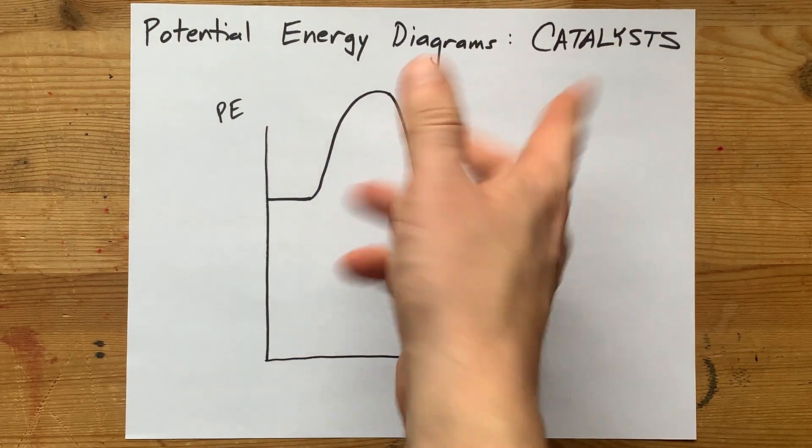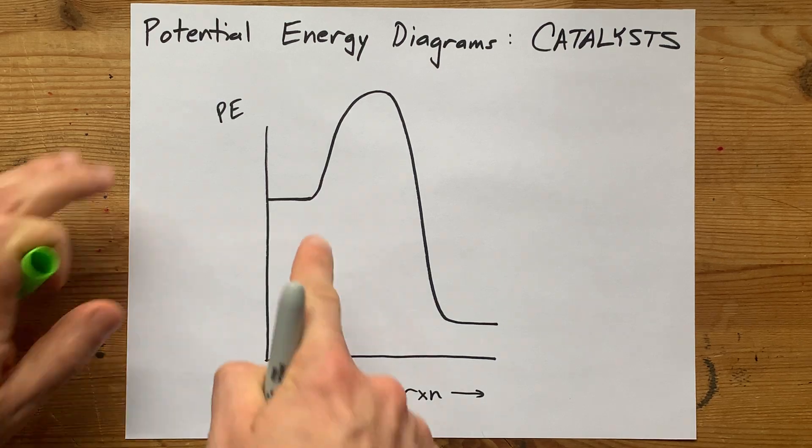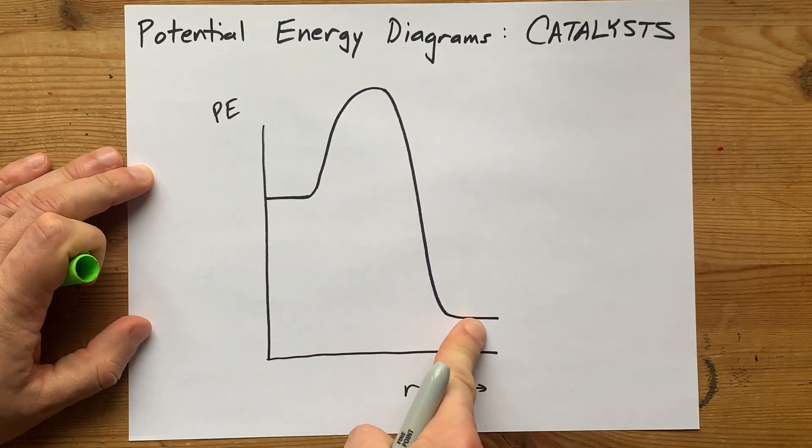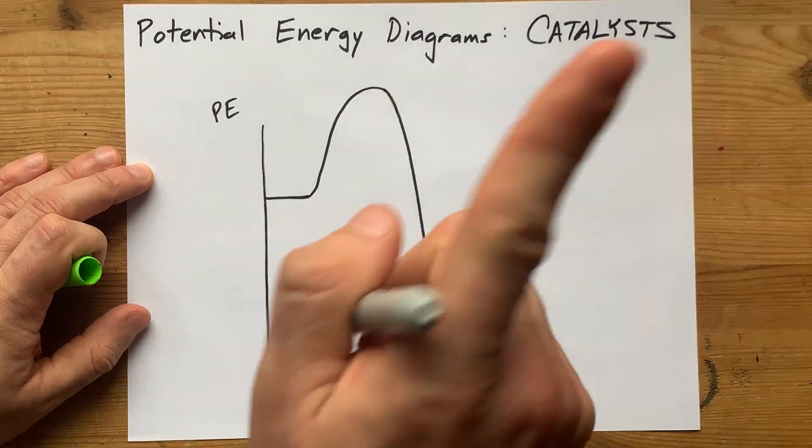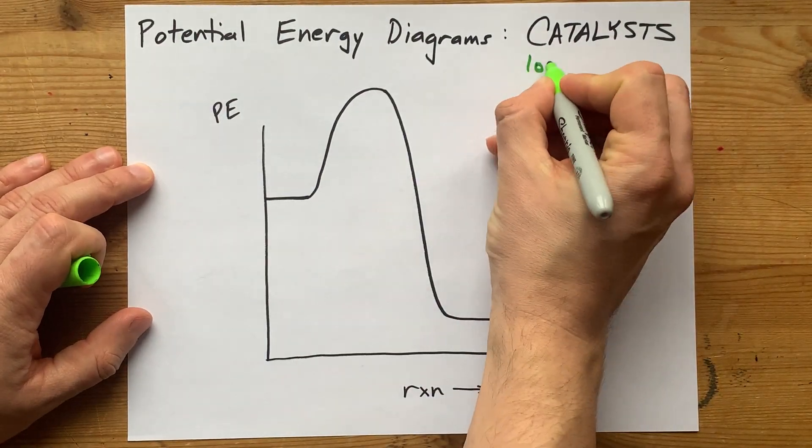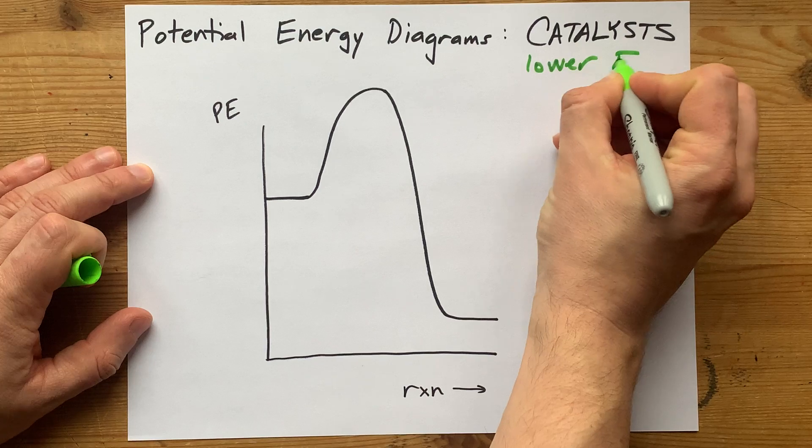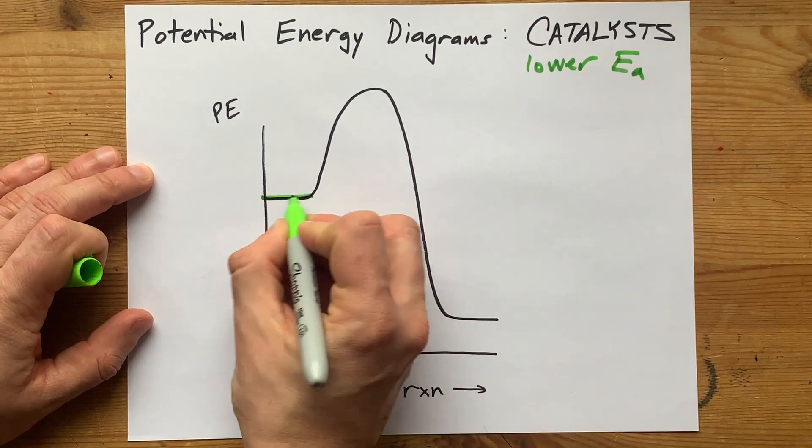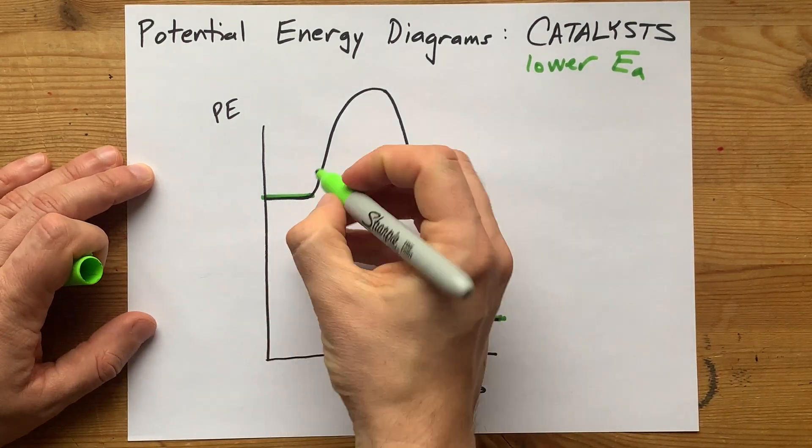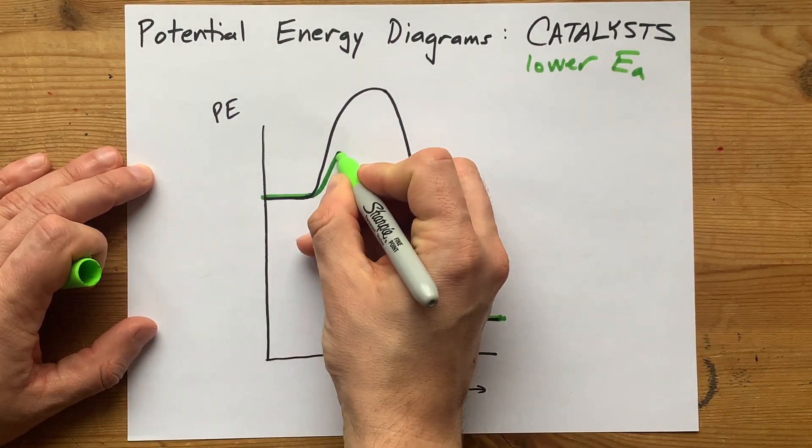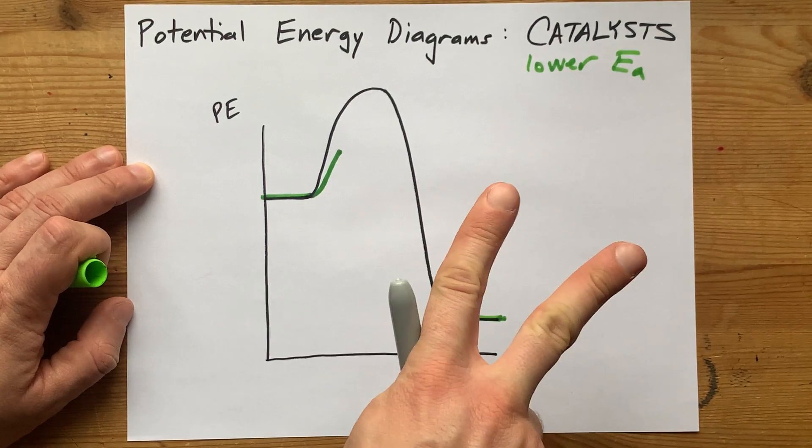A catalyst, by definition, will have the same reactants and products, but it will change the mechanism and lower the activation energy. So what I need you to do is start in the same place and end in the same place, but draw smaller humps, and I do want at least two humps.